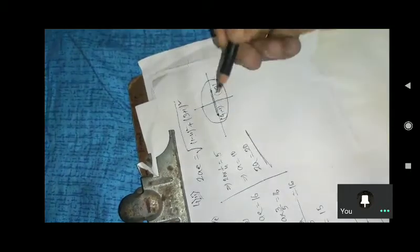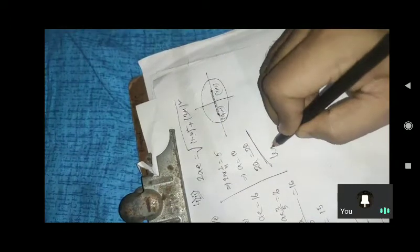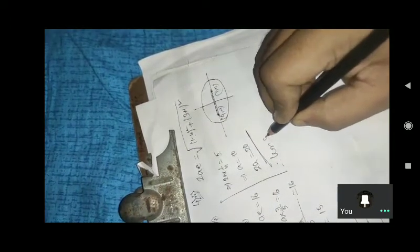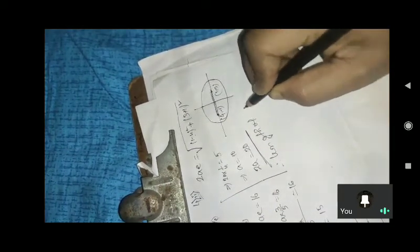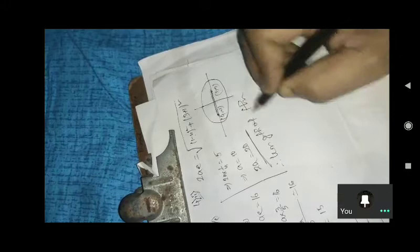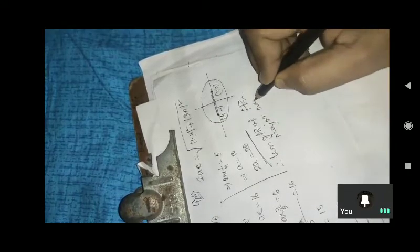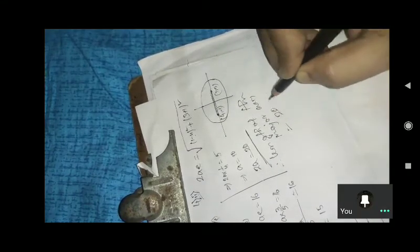This is the length of the major axis, and the length of the major axis is 20 units.